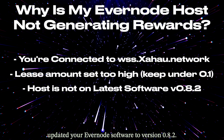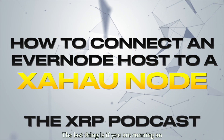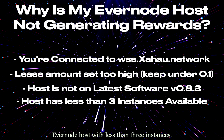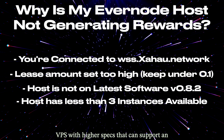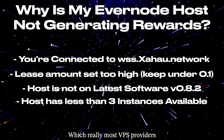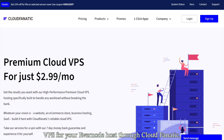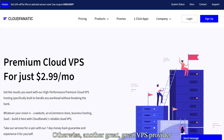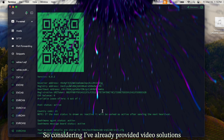Third, if you haven't already updated your Evernode software to version 0.8.2 — I have a video on that as well. Fourth, if you are running an Evernode host with fewer than three instances, you need to get a different VPS with higher specs that can support more than three instances, which most VPS providers already offer for very cheap. If you want to support the podcast, you can get a VPS for your Evernode host through Cloud Fanatic for about $8.10 with the discount code. Another great cheap VPS provider I recommend is Contabo.